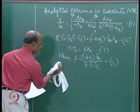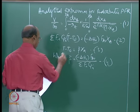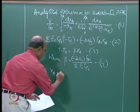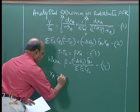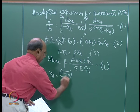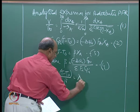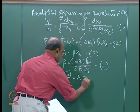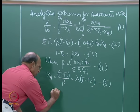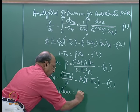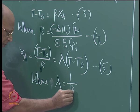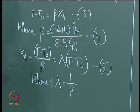So we have X_A equal to (T − T_0) / beta, which we also write as lambda * (T − T_0). This is equation 5, where lambda equals 1/beta. If I differentiate this equation, then dX_A equals lambda * dT, that is equation 6. And dT equals dX_A / lambda.